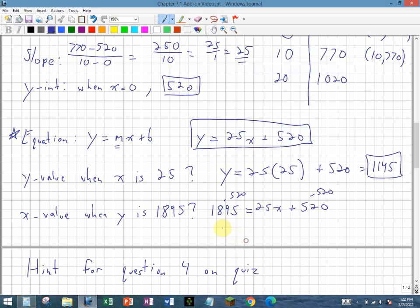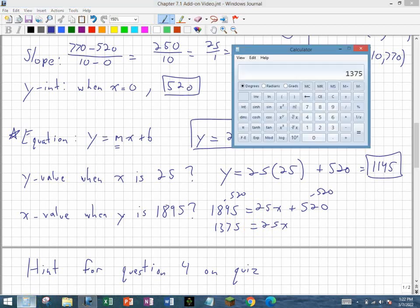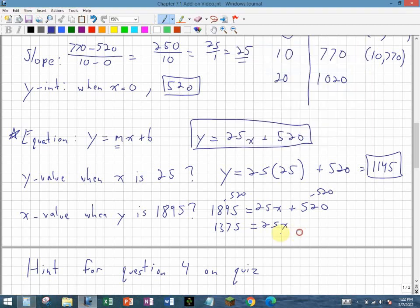So 1895 minus 520, 1375, which is equal to, and I'm left with 25x on the right-hand side. And you might be able to quickly see, oh, now I just divide by 25 on both sides. So I take 1375 and divide by 25 to get 55, which is equal to my value for x.